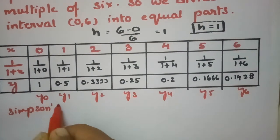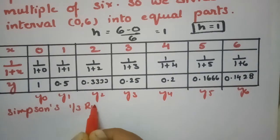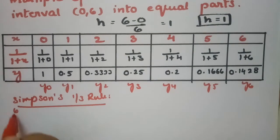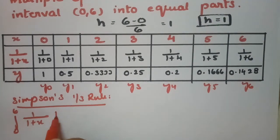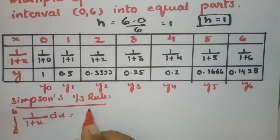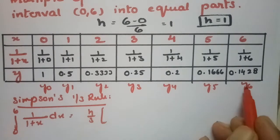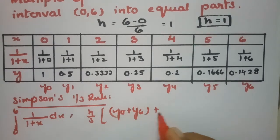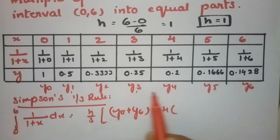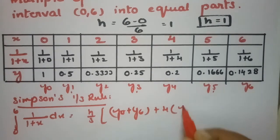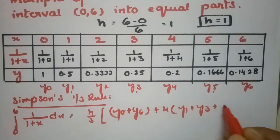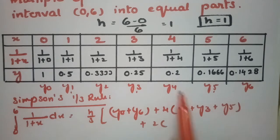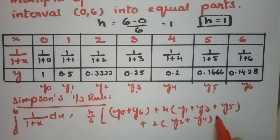According to Simpson's one-third rule, the formula for the integral from 0 to 6 of 1/(1+x) dx is: h/3 × [(y₀ + y₆) + 4×(y₁ + y₃ + y₅) + 2×(y₂ + y₄)]. That is, (h/3) times the sum of the first and last values, plus 4 times all the odd ordinates y₁, y₃, y₅, plus 2 times the even ordinates y₂ and y₄. There are 7 total ordinates.